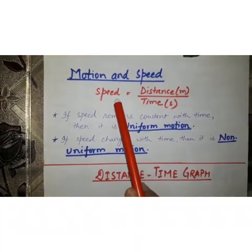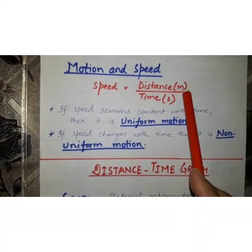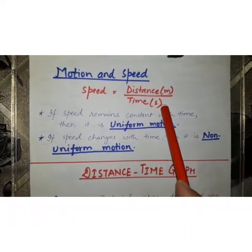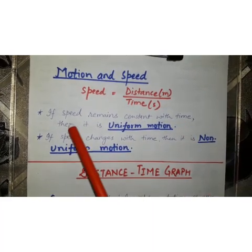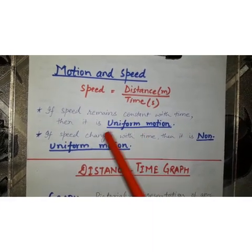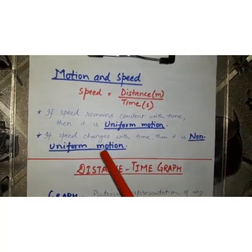Now, what is the formula for the speed? Distance upon time. Distance in meters and time in seconds. If the speed remains constant with time, then it is uniform motion. If the speed changes with time, then it is non-uniform motion.